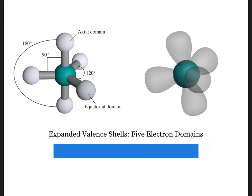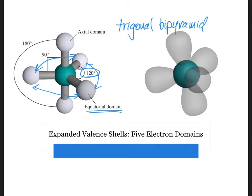Valence shell electron pair repulsion models can be used to predict the geometries of molecules with expanded valence shells. The most stable shape for five domains is the trigonal bipyramid. In this three-dimensional shape, we have three equatorial positions with bond angles of 120 degrees between the groups, and two axial positions with bond angles of 90 degrees between the axial and equatorial domains.